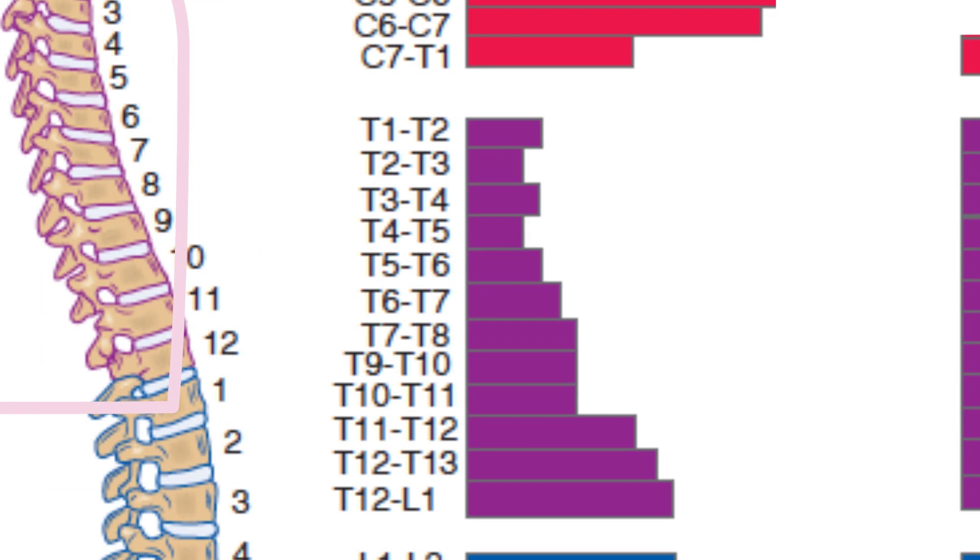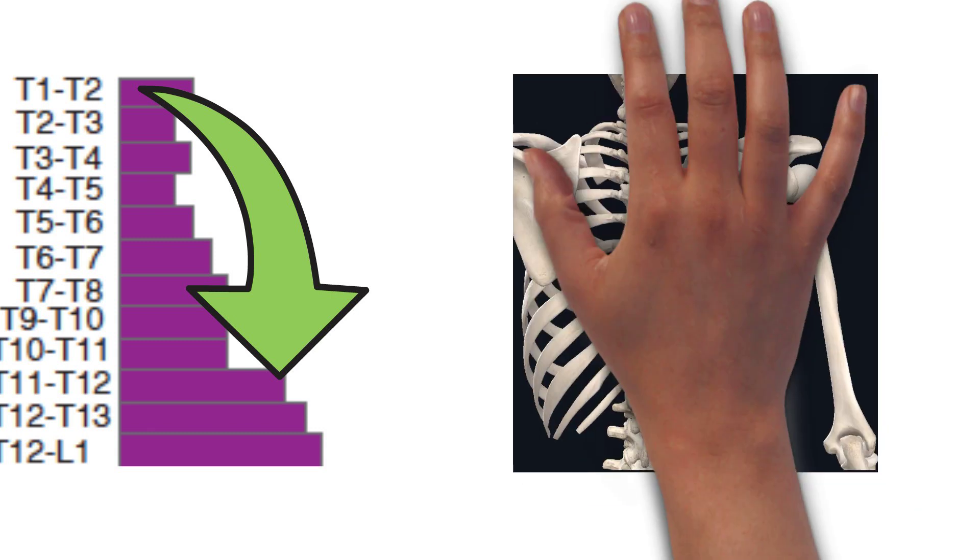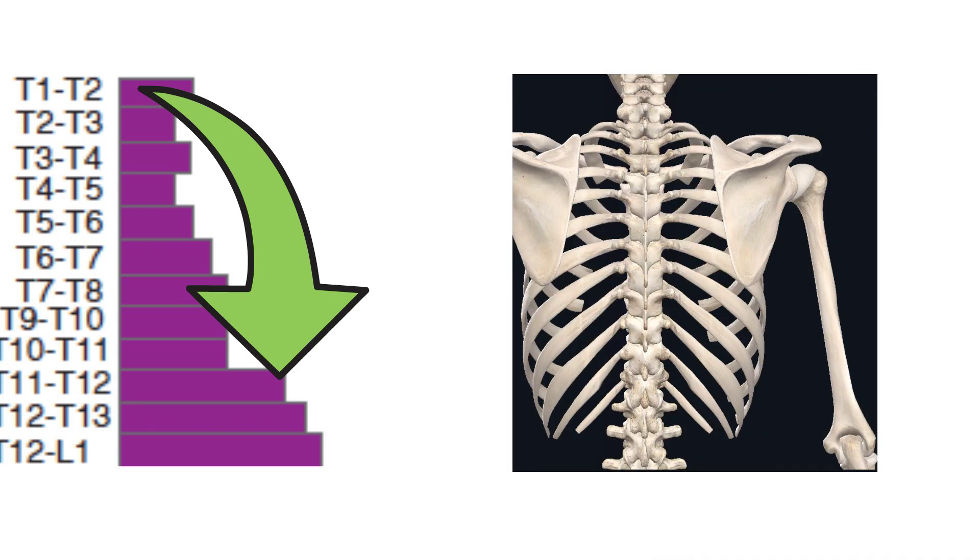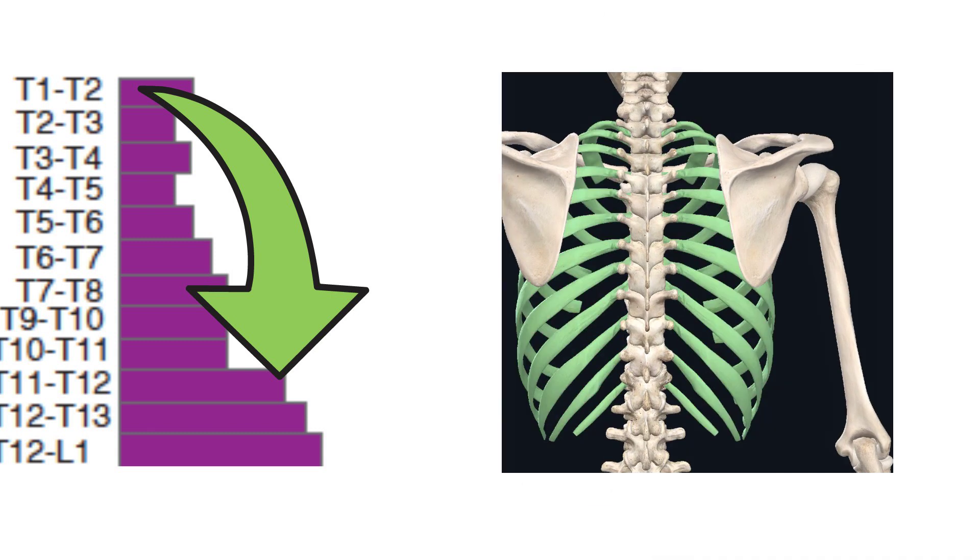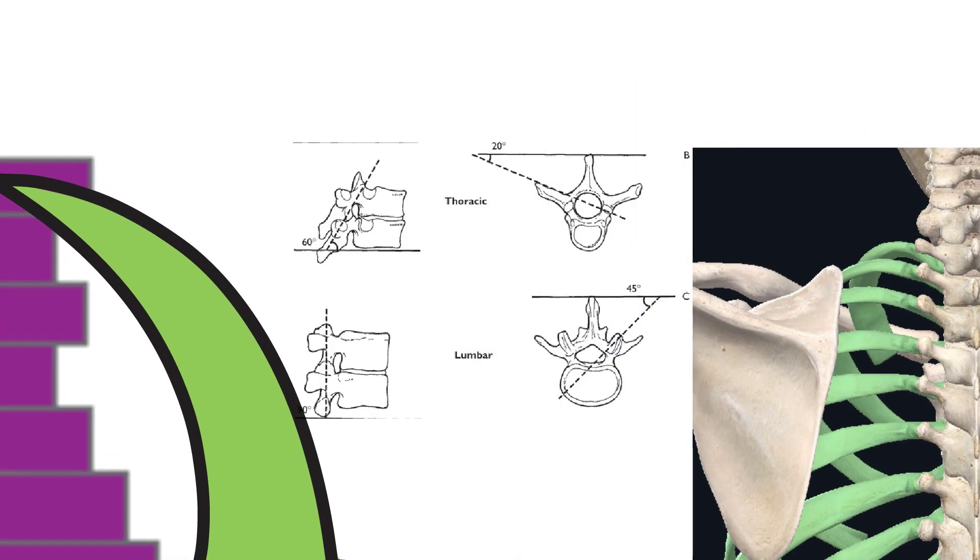What stands out in the sagittal plane is that as we move down the spine, we notice an increase in flexion and extension. This is actually secondary to a change in the orientation of the articular structure. The joint orientation changes from the frontal plane to the sagittal plane, thus adding the degrees to flexion and extension movements.